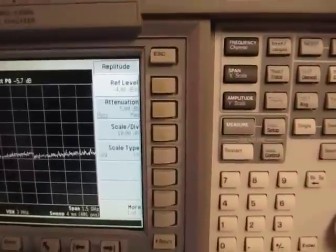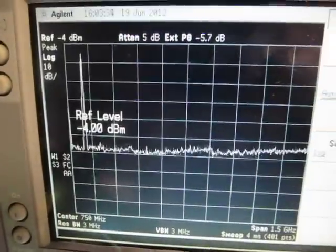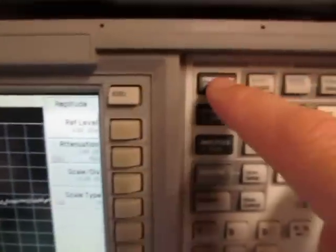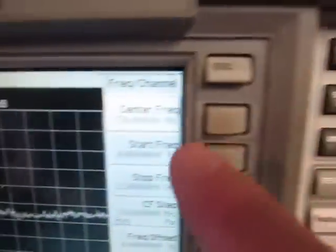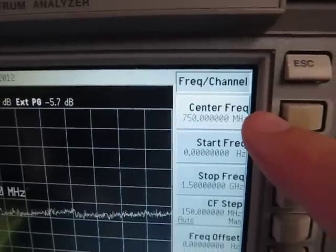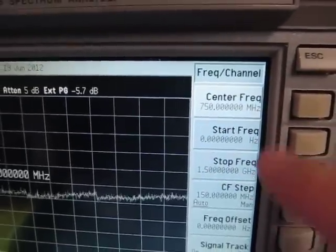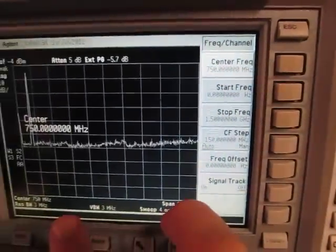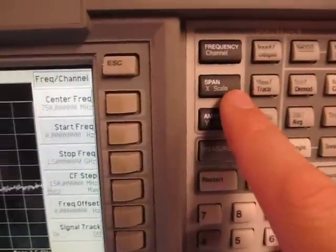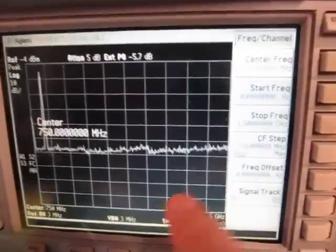The rest of it is just setting up the parameters to display the signal that you want. Typically you'd set center frequency by hitting the frequency button here. And the first thing you typically set is center frequency. Optionally, you can set a start and stop frequency here, which is kind of, instead of setting a center frequency and a span by using the span key, you could just hit a start and a stop frequency instead.